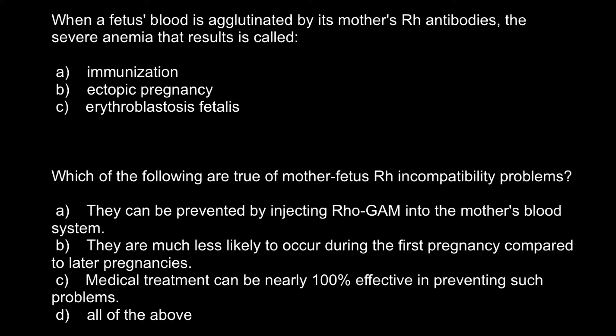The fetus's blood is agglutinated as a result of immunization of the mother by RH-positive antigens that can be found on the red blood cells of the fetus. Because the mother doesn't have these antigens or proteins, her immune system starts to make antibodies that would kill these foreign proteins. The organism of the mother behaves the same way as if these were proteins of bacteria or a virus, so the immune system produces antibodies that kill the red blood cells of the fetus.